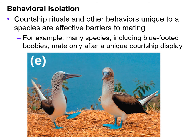Behavioral isolation is the third type of reproductive barrier we will discuss — courtships, dances, behavior that is unique to a species, are effective barriers to mating. For example, many species, including the blue-footed boobies, mate only after a unique courtship. So if you dance differently than what she is used to seeing, then you can't court, sperm and egg will not unite, and you can't make the zygote. So this is a prezygotic barrier.